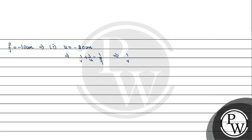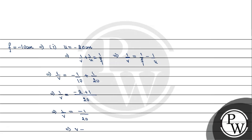Rearranging: 1/v₁ = 1/f − 1/u₁. Substituting values with f = −10 and u₁ = −20: 1/v₁ = −1/10 + 1/20. Taking LCM of 20: this gives (−2 + 1)/20 = −1/20. Therefore, v₁ = −20 cm. This means the image distance of the first end is 20 cm (the negative sign indicates the direction per sign convention).